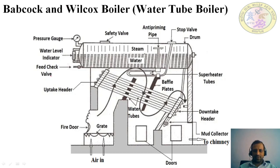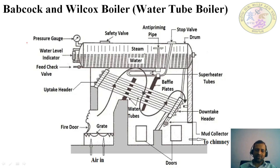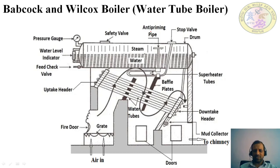In this figure, the arrangement of this boiler is shown. Some of the parts or components are similar to the previous boiler as far as the mountings and accessories are concerned. The working procedure is different, but the boiler mountings and accessories are similar — for example, the pressure gauge, water level indicator, feed check valve, safety valve, anti-priming pipe, stop valve, and drum. The functioning of the components will remain the same.